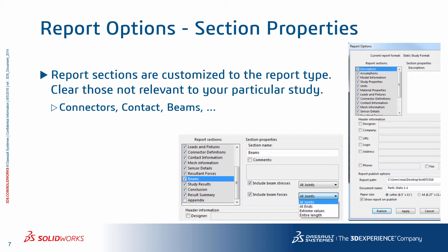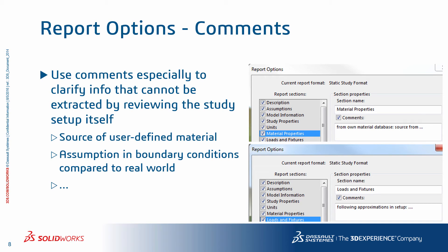The report sections are customized to the report type. Select or clear a report section to include or exclude it from the report. The customizable information in section properties varies depending on the selected report section. You can customize these sections with comments or set options to include additional data. Use comments especially to clarify info that cannot be extracted by reviewing the study setup itself — for example, if you are assigning a user-defined material, you may want to comment on the source of that data, as a colleague may want to know if it can be reused elsewhere and if it is from a reliable source.